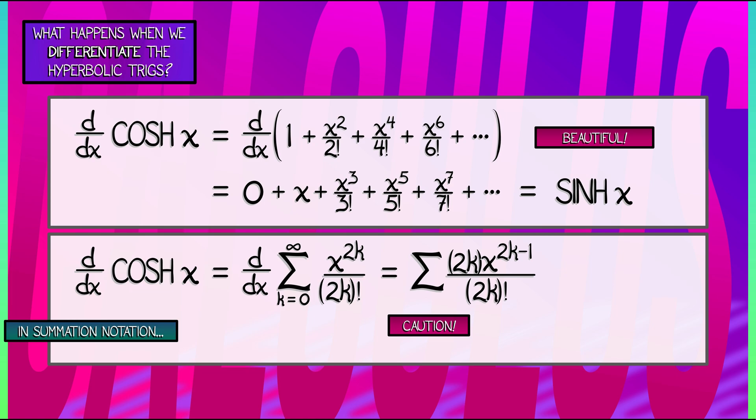What happens if I plug in k equals 0? Ooh. Hmm. A little nervous there. There is a 0 out in front. So, that does kind of kill the x to the negative 1, but I'm a little nervous about this, especially when I have to cancel the 2k below.